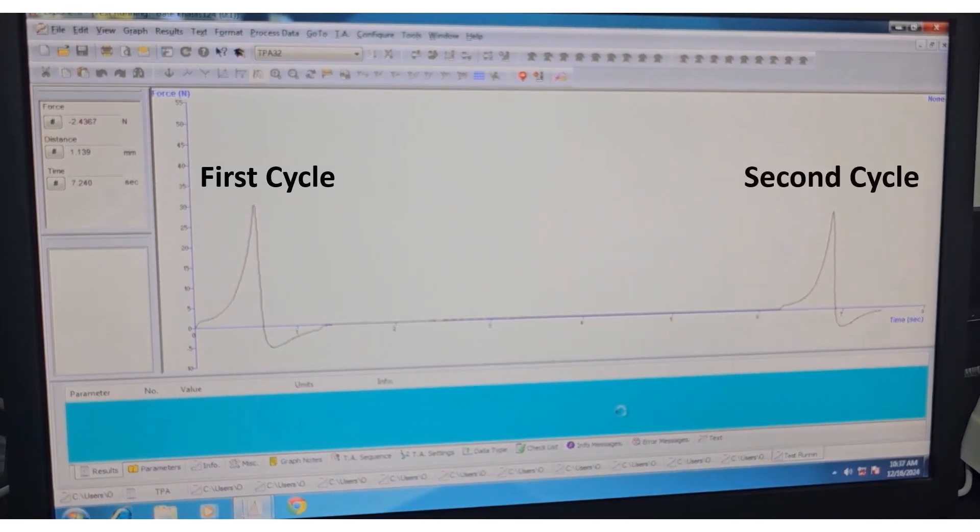We need to use this TPA graph to determine different TPA textural parameters to characterize the sample. These characteristics could also be related to the sensory texture measurement by test panel.